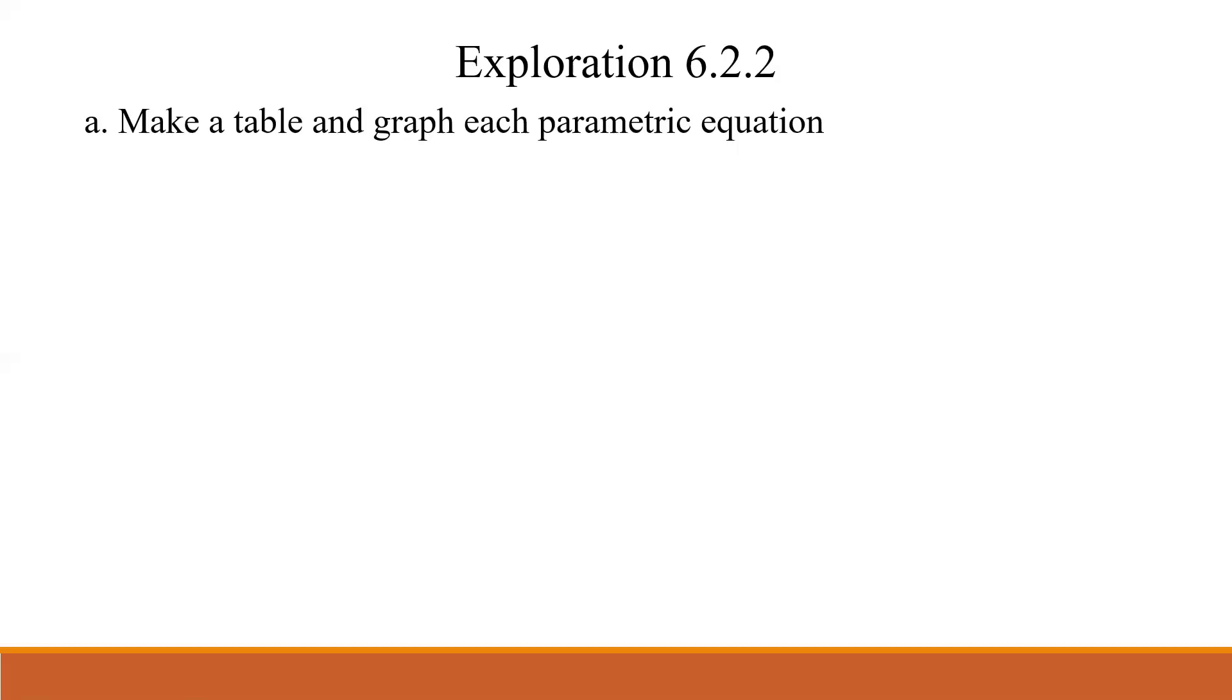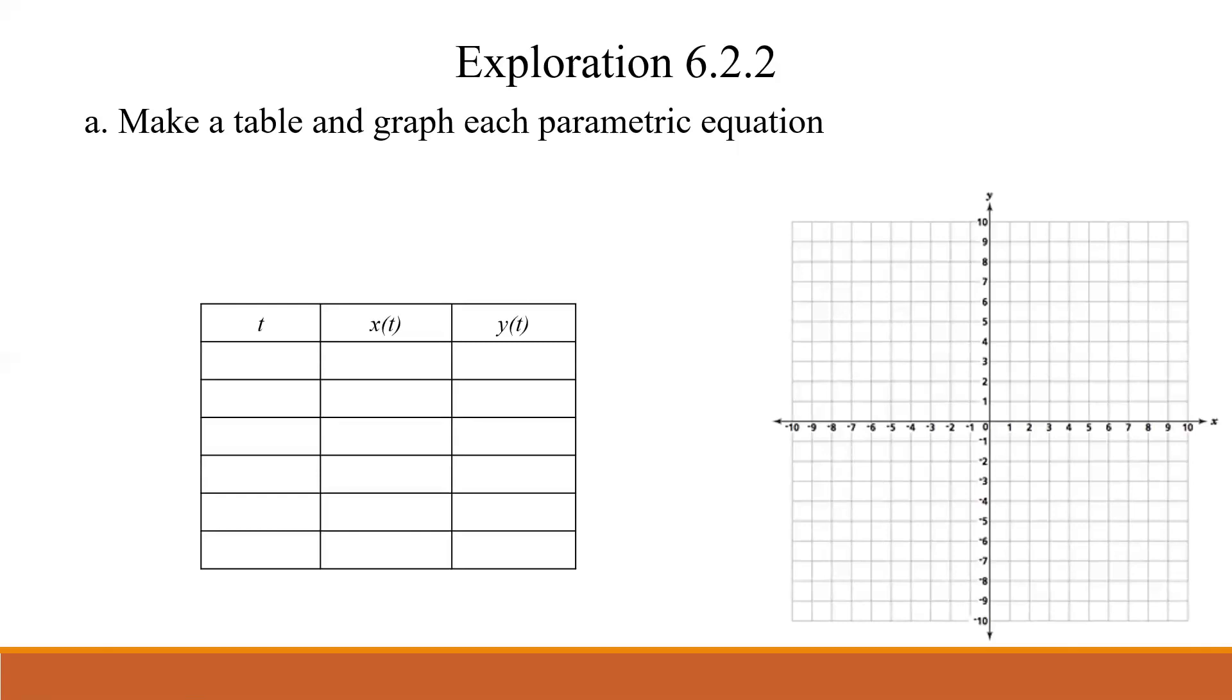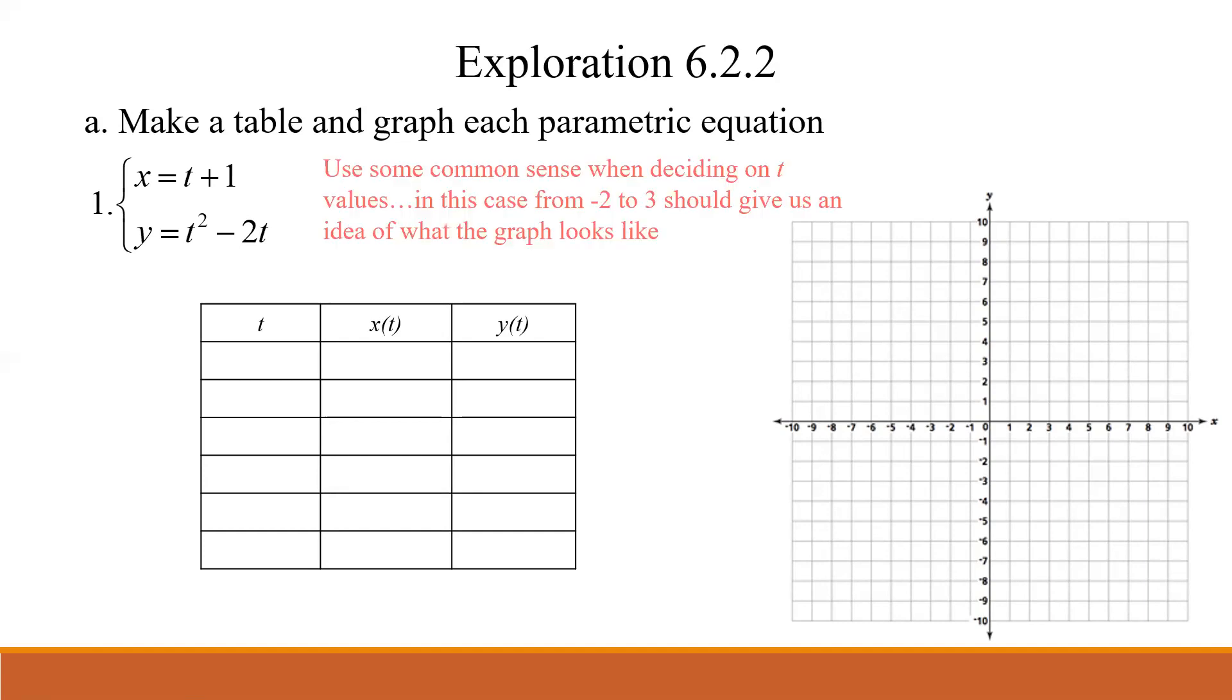So 6.2.2 is a little bit more involved. So now we're given four different sets of equations. And for part a, it wants us to make a table and graph each of those parametric equations. So here's a graph, here's a table, and my first equation is this. x equals t plus one, y equals t squared minus 2t. Listen, when you're choosing your t values, just use some common sense. I think in this case we can go from negative two to three, but you want to make sure that you're getting all of the relevant behavior of a graph. So I'm going to put my t values in there. And then you just put those t values in each individual one to get your point.